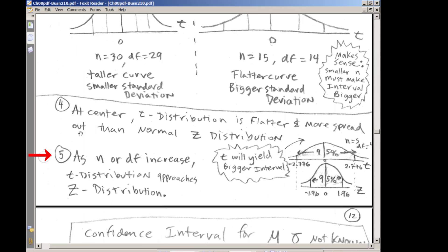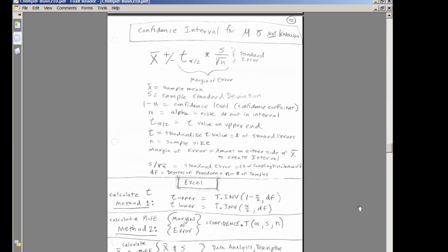Finally, the fifth characteristic, as n or degrees of freedom increase, the t-distribution approaches the z-distribution. Above 100, they're almost the same. Now let's go to our next page here.